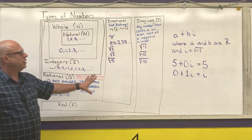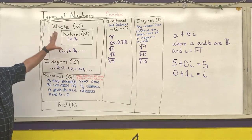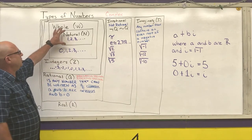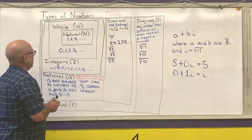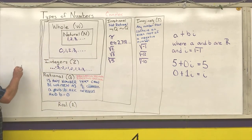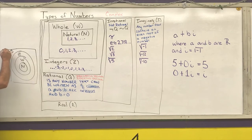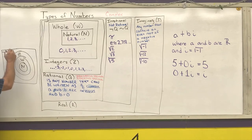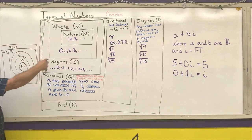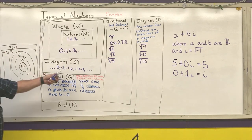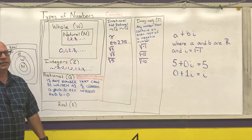You need to be able to reproduce this diagram. A lot of people start with natural numbers in the center, then whole numbers, then integers, then Q for rational, then not-Q for irrational. All of these are real. Then they continue on adding the imaginary. I don't care how you represent the diagram, but you need to be able to place numbers within the correct regions on the diagram.